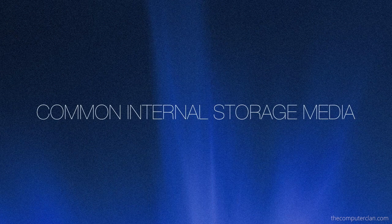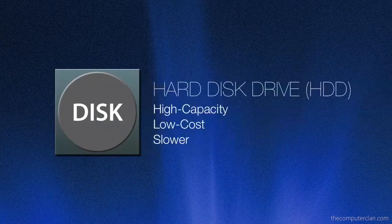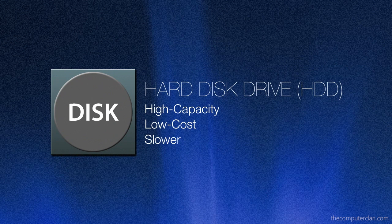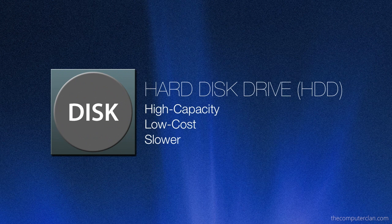First of all, let's start with some basics. What are some common types of internal storage media? There are two I would like to cover. The first one is a hard disk drive. These are pretty common — they can store a lot of data, three, four-plus terabytes. They're not that expensive, and overall they are slower compared to a solid-state drive.